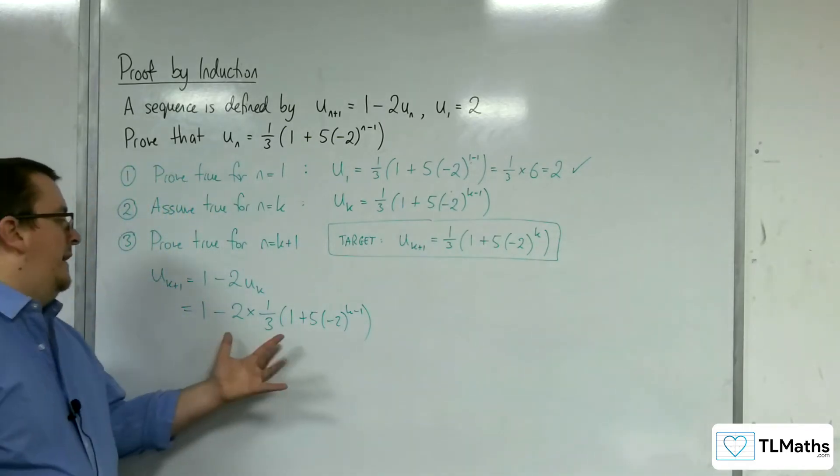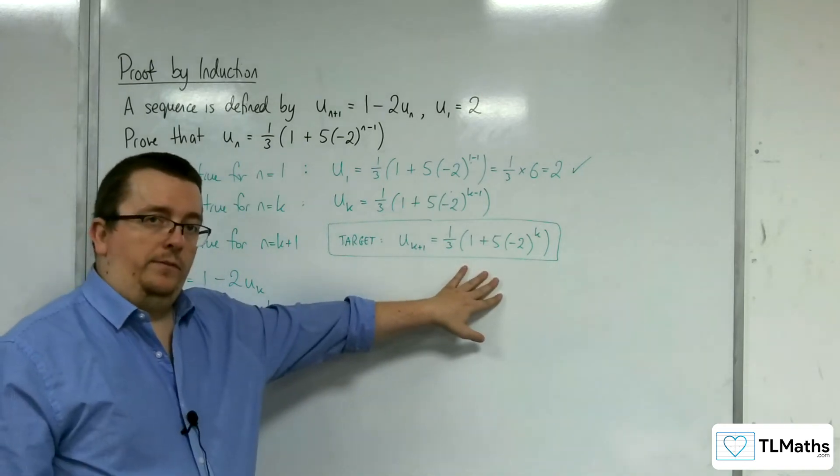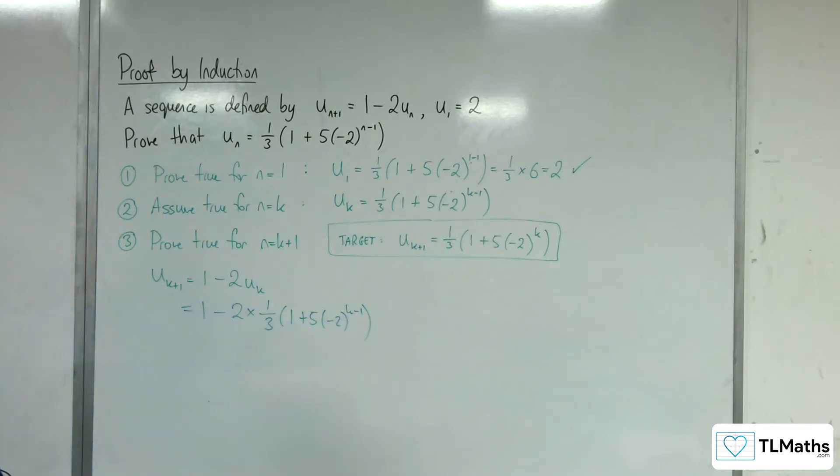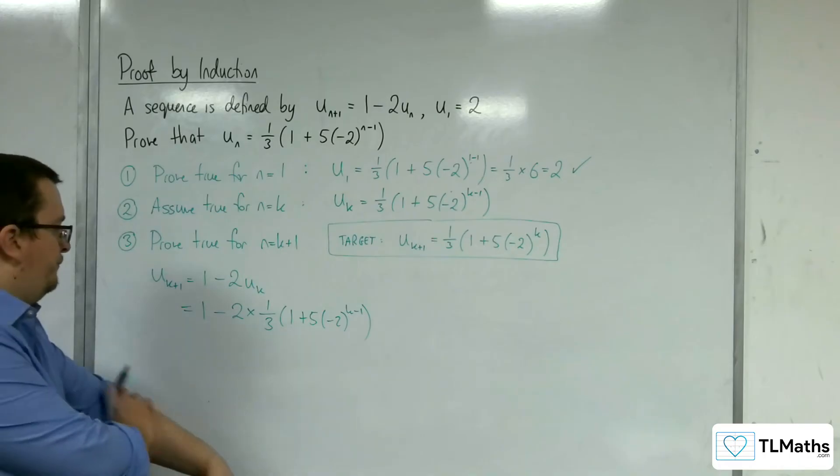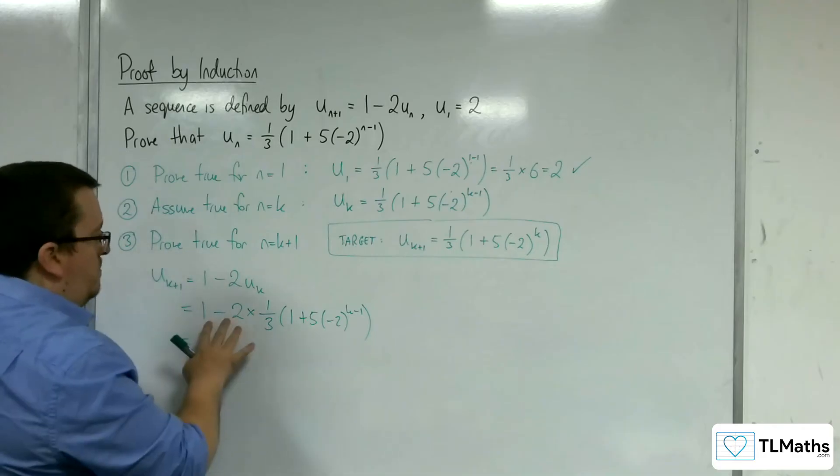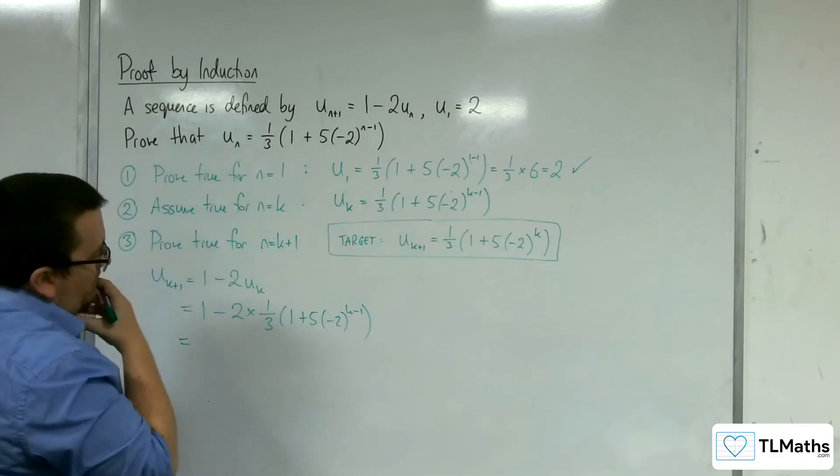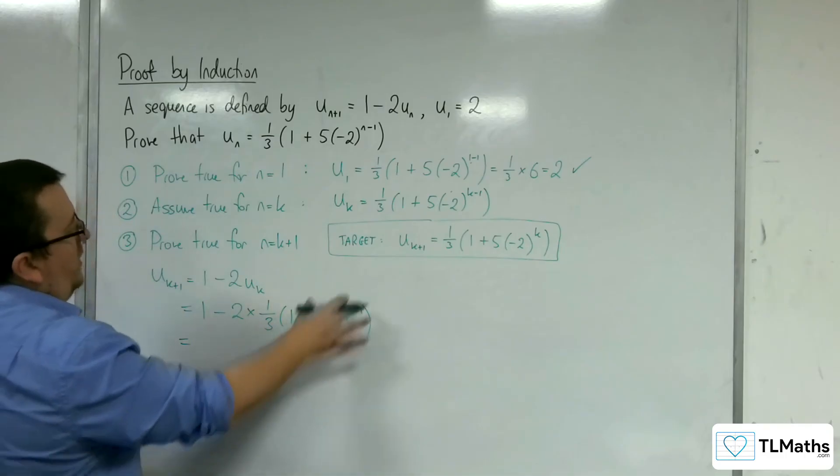So the idea then is that we can write this as this. That would be what we would want to get to. So what have we got? So I'm going to multiply this through. Well, maybe not actually, because I know what I need to get to.